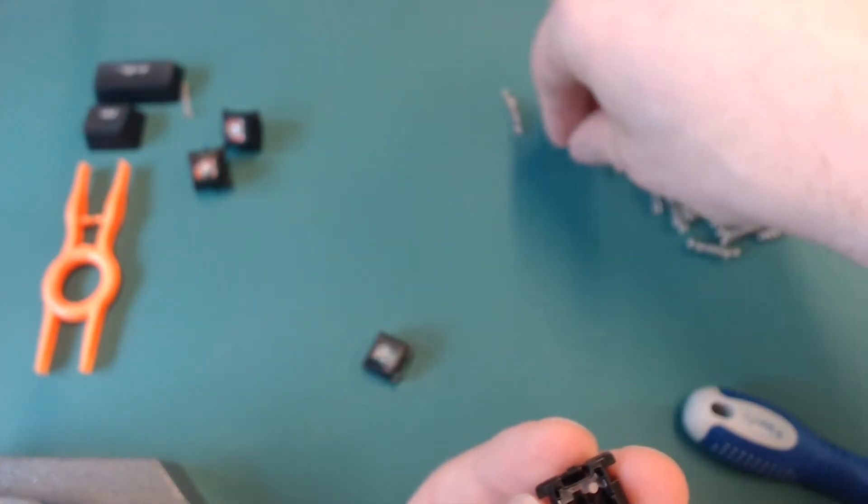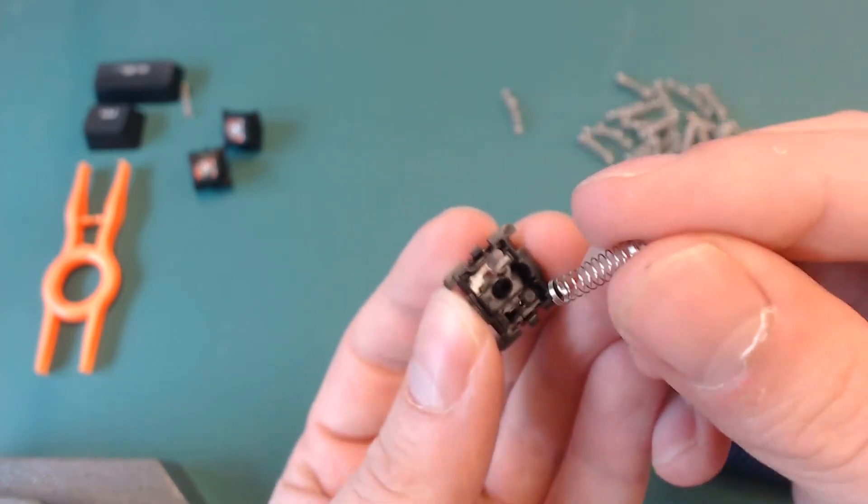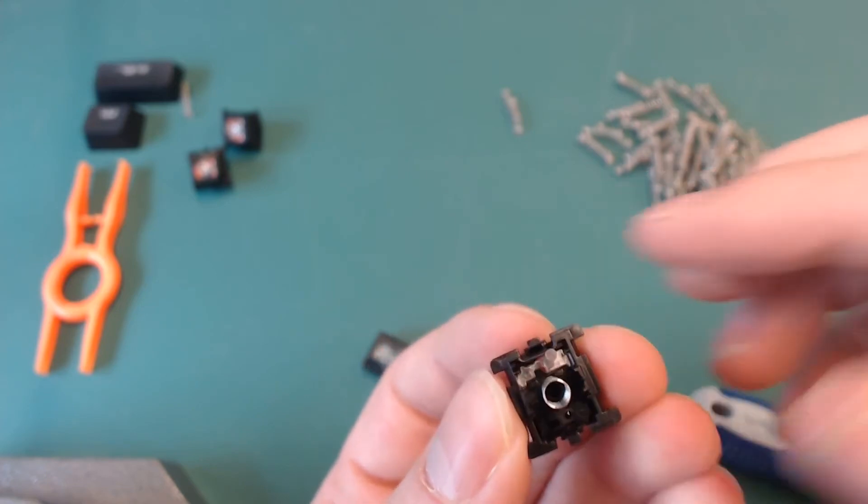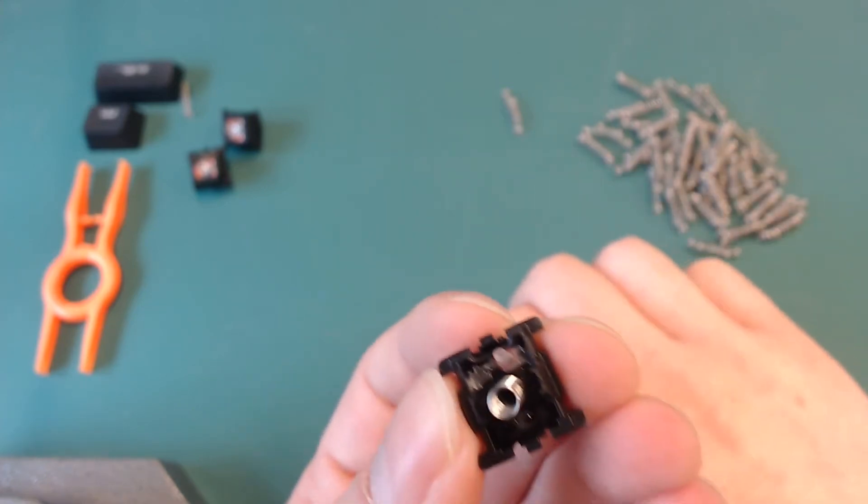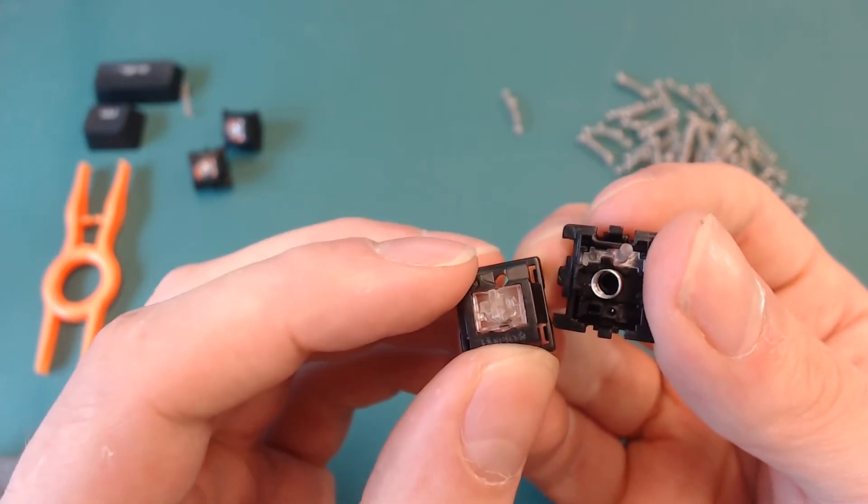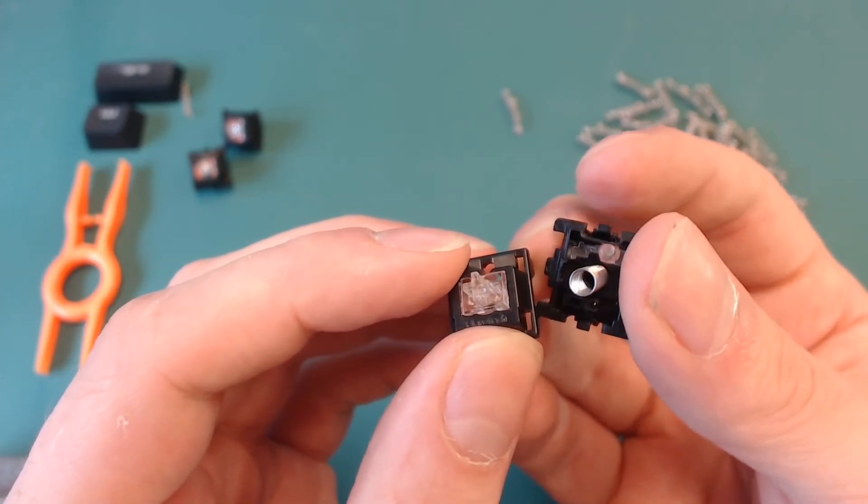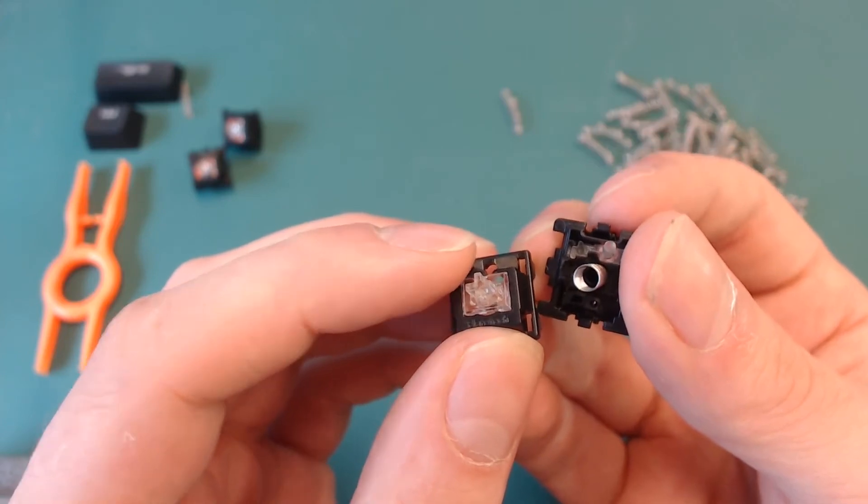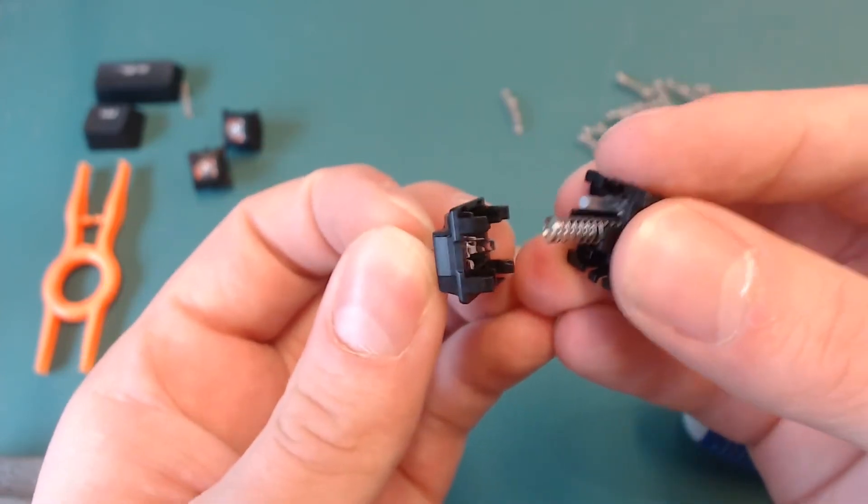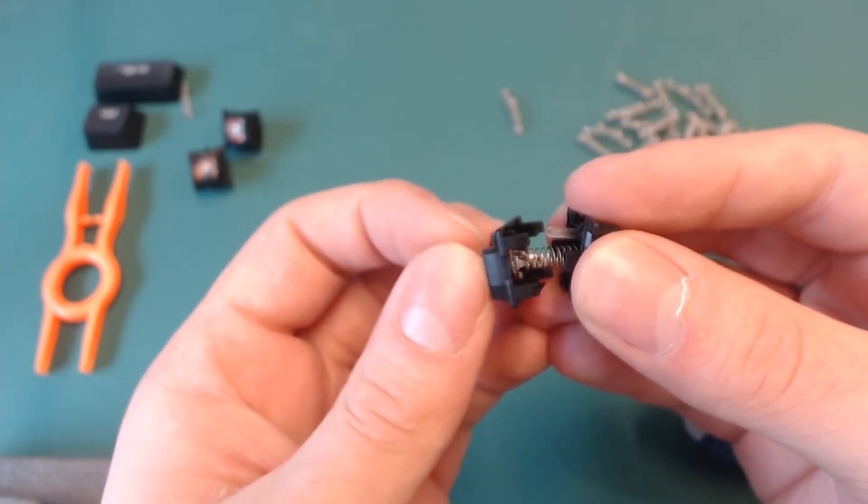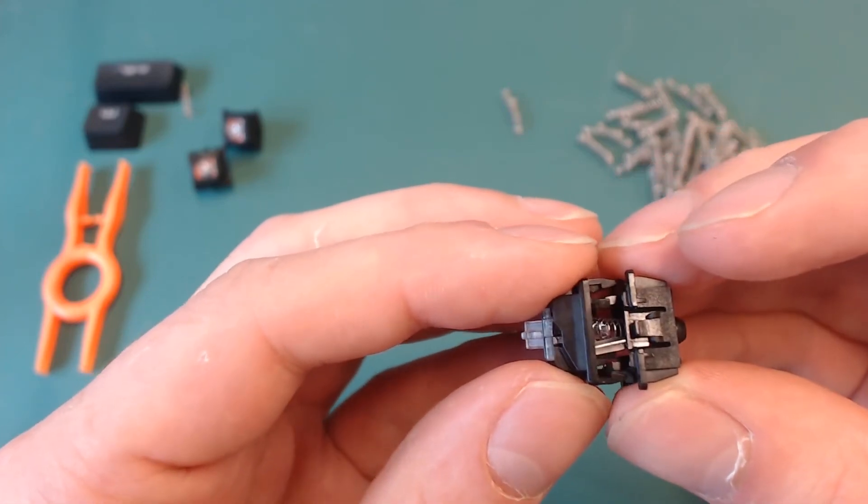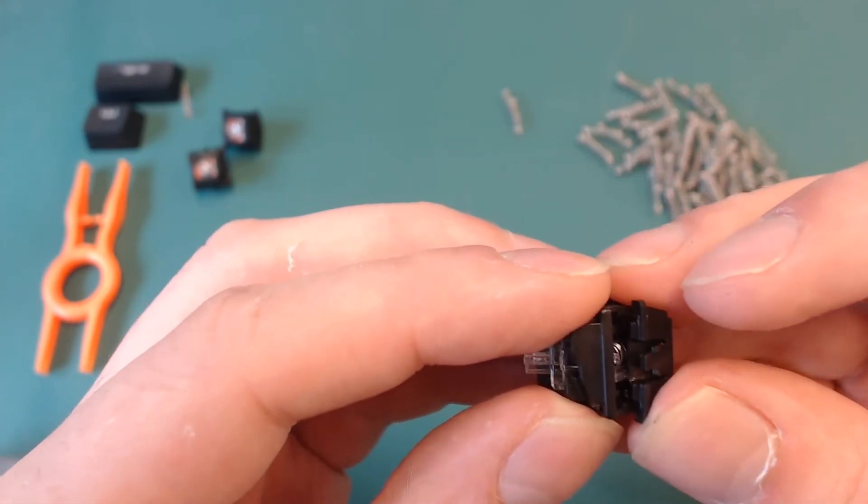The next thing we're going to do is grab a new spring, a new Cherry spring, and just put it over the center so it stays there. Make sure that the circle from the top part is aligned with the clear stem in the bottom case. Make sure the spring goes over the stem on the inside and when everything goes right it should pop back together very easily.